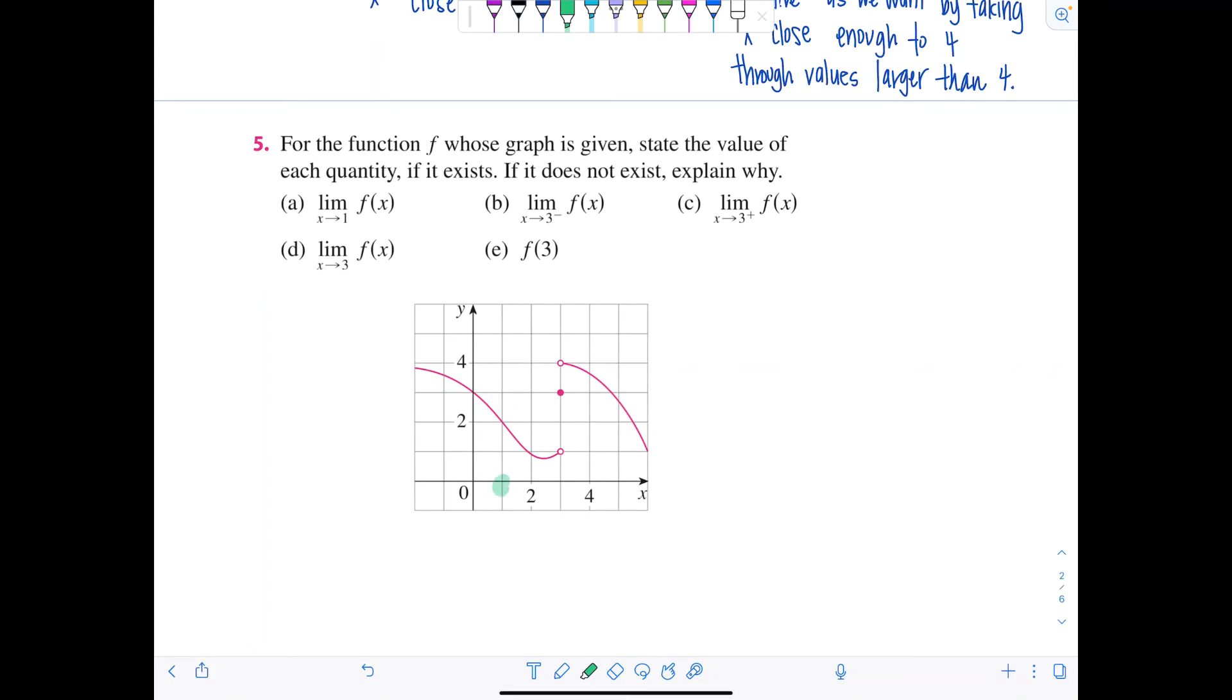So they didn't tell us from which side. So you're just going to imagine you're walking on the graph from the left side of 1. It looks like the y value is approaching 2. Is that the same from the right side of 1? It is. So that's our limit. The limit as x approaches 1 of f of x equals 2.